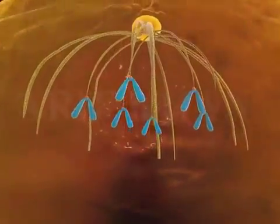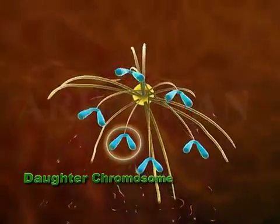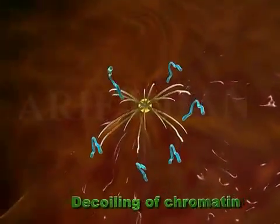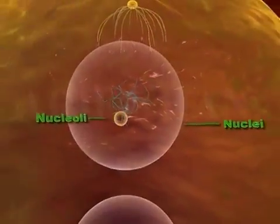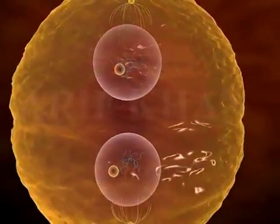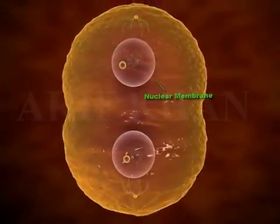Telophase. During telophase, the daughter chromosomes arrive at the pole and the chromatin starts to decoil. Also, the nuclei reform along with nucleoli. This triggers the reformation of the nuclear membrane.